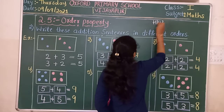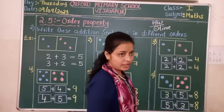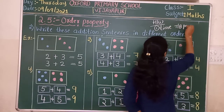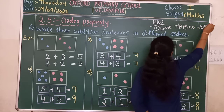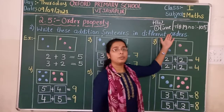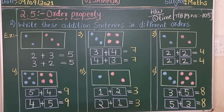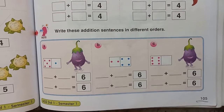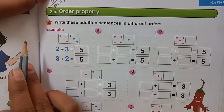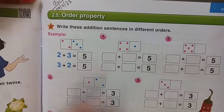For homework, you have to copy this down in your book one time. Then, children, we will learn the same examples in the textbook. The textbook page is one hundred and five. We will see more examples there and copy them down. Open textbook page one hundred and five. Write down today's classwork date and the topic: order property. Write these addition sentences in different orders.